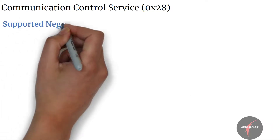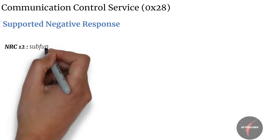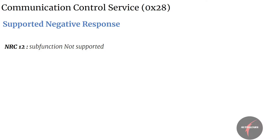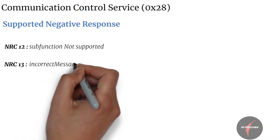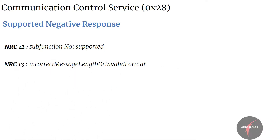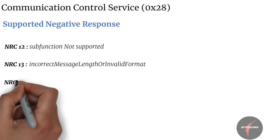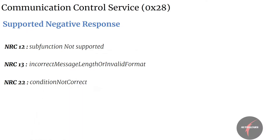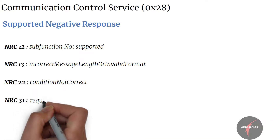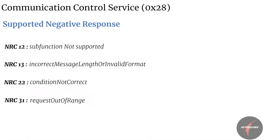Now let's have a look into the NRCs supported by this service. NRC 0x12 — sub-function not supported — shall be sent if the sub-function parameter is not supported. NRC 0x13 — incorrect message length or invalid format — shall be sent if the length of the message is wrong. NRC 0x22 — condition not correct — shall be sent when the server is in a critical normal mode activity and therefore cannot disable or enable the requested communication type. NRC 0x31 — request out of range — shall be used if the server detects an error in the communication type or node identification number parameter.